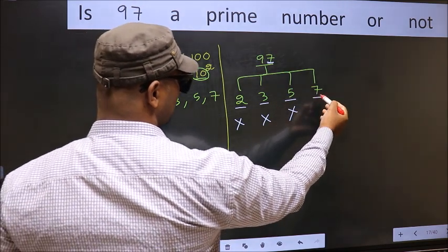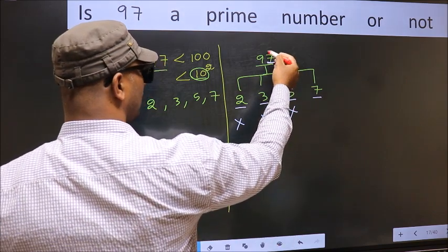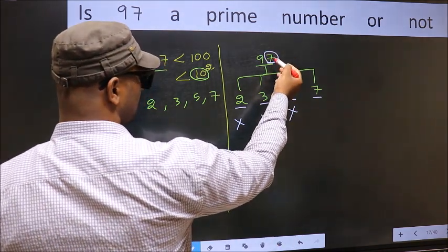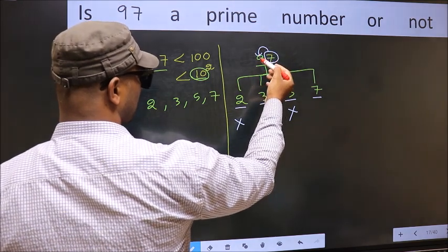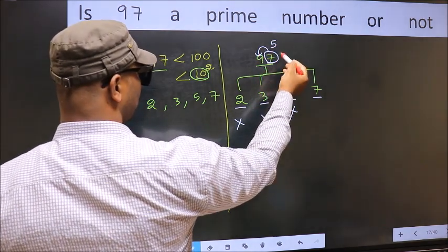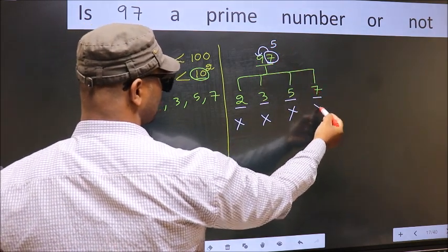Next, number 7. To check divisibility by 7, for that, you double this. 7 into 2, 14. Subtract from this number. 14 minus 5. 5 is not divisible by 7. So, this number also not divisible by 7.